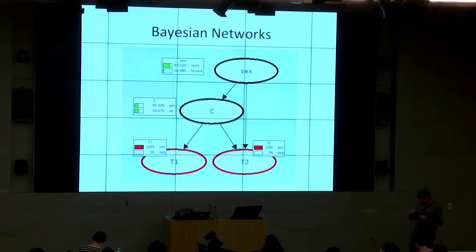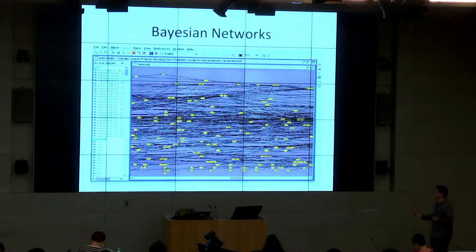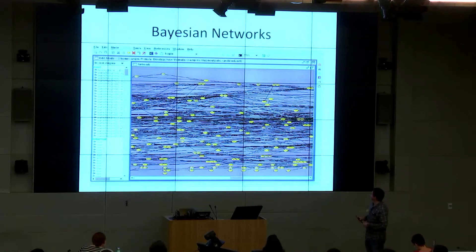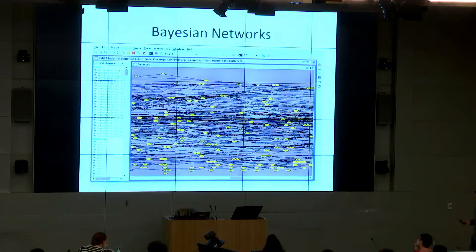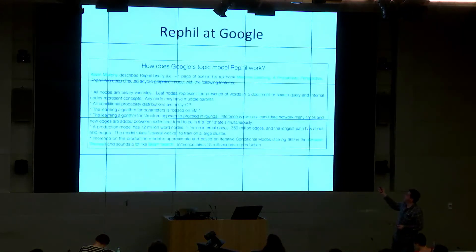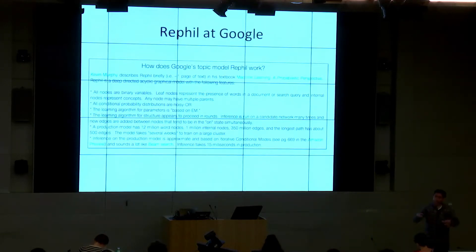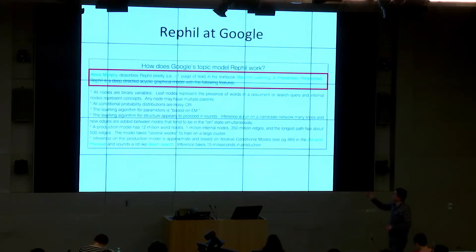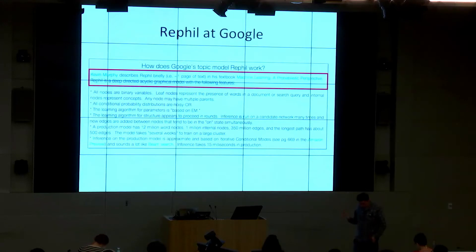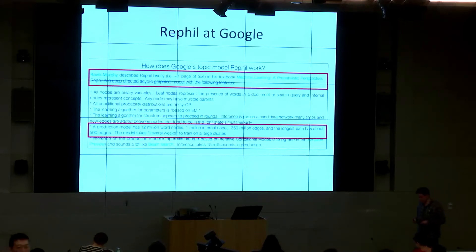Here's another example of a Bayesian network from medical diagnosis. It talks about conditions that patients may have, a couple of tests that bear on these conditions, and one that depends on gender. These are toy networks. Real-world Bayesian networks may look much more complex — this one is actually synthesized from high-level information, not built by hand. They can get bigger than this; for example, a Bayesian network employed by Google known as Refill for topic modeling, described in Kevin Murphy's machine learning book, has millions of nodes and edges, yet inference happens in milliseconds.